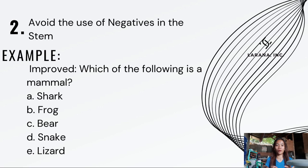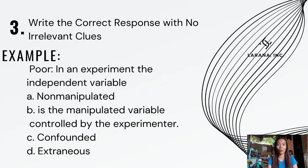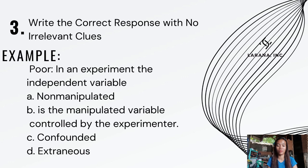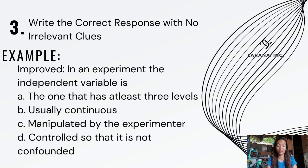Next, write the correct response with no irrelevant clues. There should be no difference in wording length or detail between the correct answer and the distractors, so that student knowledge is truly tested. For example, in a poor item about the independent variable, the correct answer is much longer and more elaborate than the distractors, making it obvious. The improved version keeps all alternatives — such as 'the one with at least three levels,' 'usually continuous,' 'manipulated by the experimenter,' or 'controlled so it is not confounded' — similarly worded.